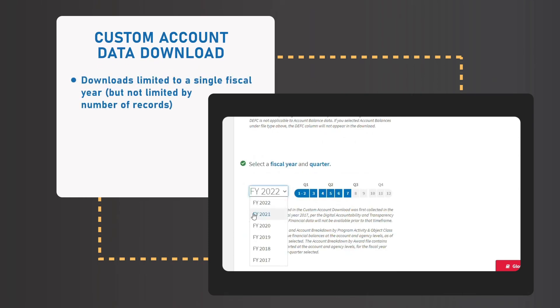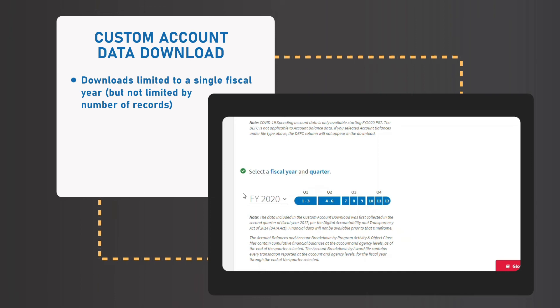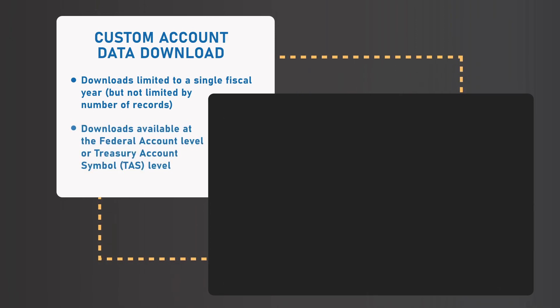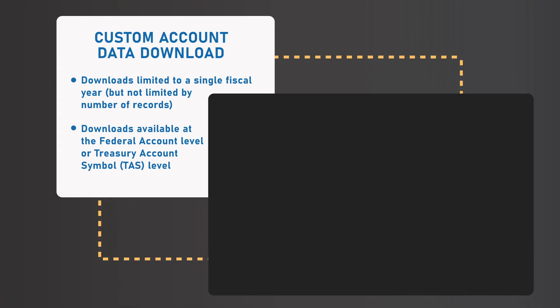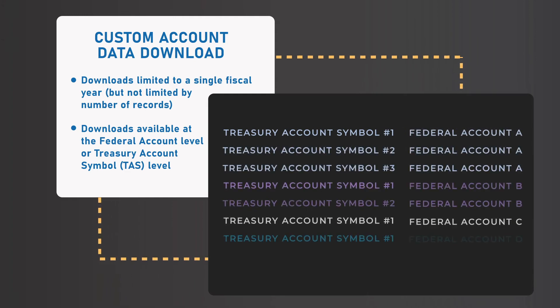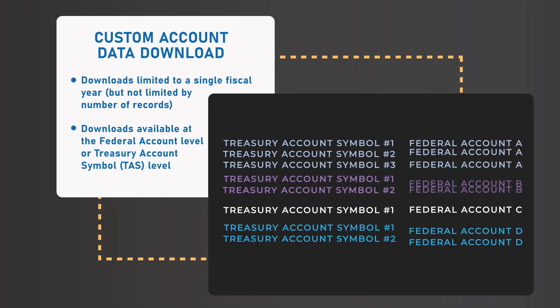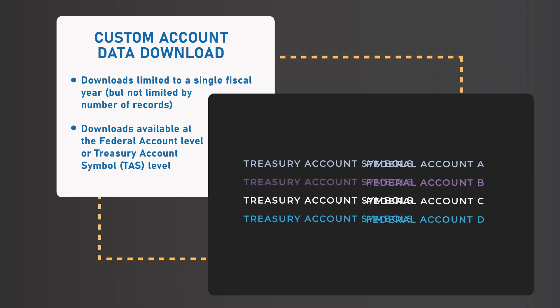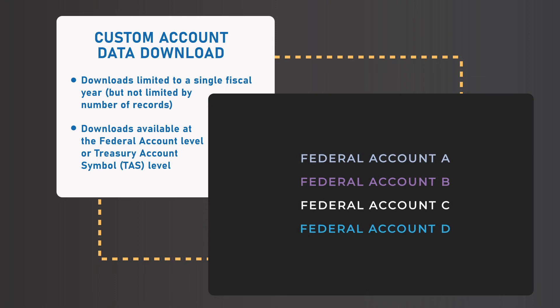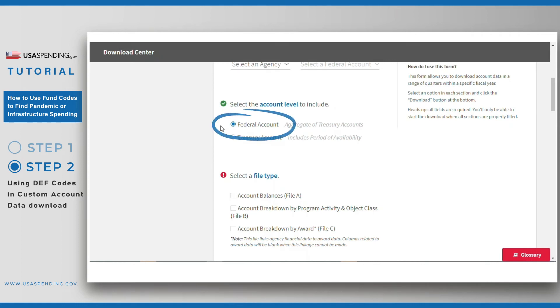Here's what you need to know before using the custom account data download. Unlike Advanced Search, there is no limit for the number of records you can download per se, but you can only download data for one fiscal year at a time. You have the option to download data at the federal account level or the treasury account symbol level. Both files contain the same spending data at different levels of detail. Federal account data is essentially a roll-up of treasury account data, so you'll see fewer records in federal account files than in treasury account symbol files. We recommend selecting federal account unless you have a reason to choose treasury account symbol, such as if you're interested in the period of availability of the funds from the individual treasury accounts within each federal account.